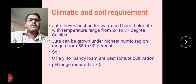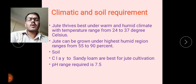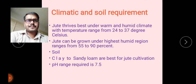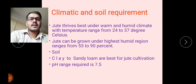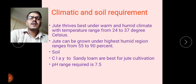Now we discuss the climatic and soil requirement of the jute crop. Jute thrives in a tropical and humid climate with a temperature range of 24 to 37 degrees Celsius. Warm and humid climate is beneficial for its growth and development. Jute can be grown in highest humid regions ranging from 55 to 90 percent humidity — high rainfall areas give maximum production.